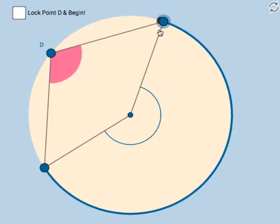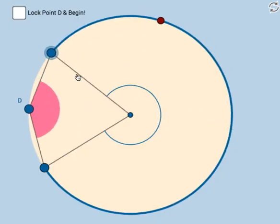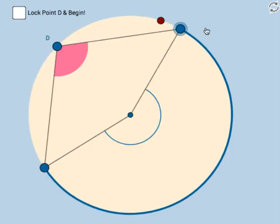I mean, if I make this intercepted arc really huge, well yeah, this pink angle is really big, but guess what? So is that huge central angle right there.